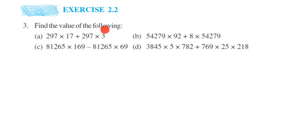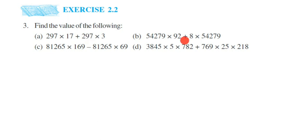If you observe this question carefully, we have two numbers multiplied and then plus two more numbers multiplied. You will also notice one number which is repeating on both sides of the addition. On the left side we have 297, on the right side we have 297. If you observe all other questions, you will see the same number repeated on both sides of addition or subtraction. So in the first question, 297 is repeated on both sides, which means you have to use the distributive property to solve it.